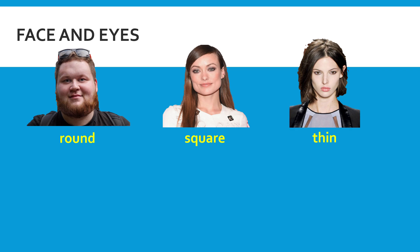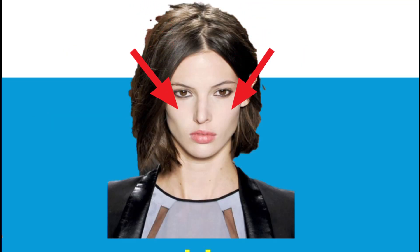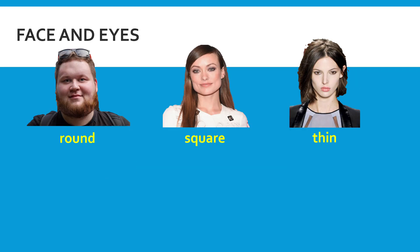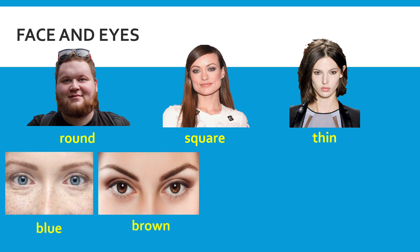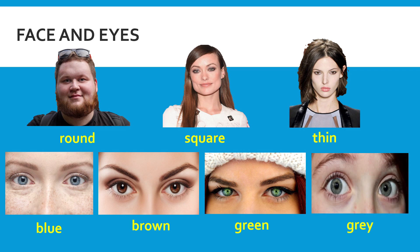To differentiate a square face from a thin face: a person with a thin face has a more prominent jawline pointing downwards toward the chin. A square face also has a jawline, but it is wider. For eye colors, we cover blue, brown, green, and gray in this lesson.